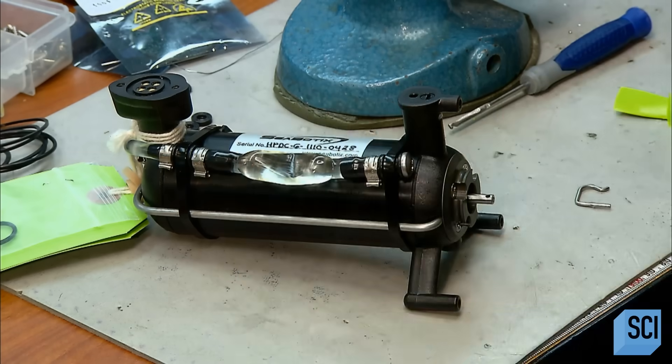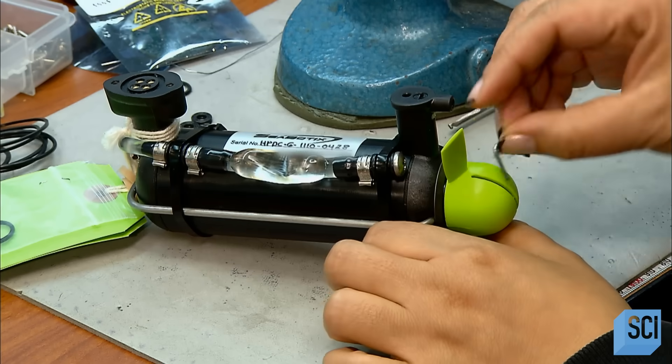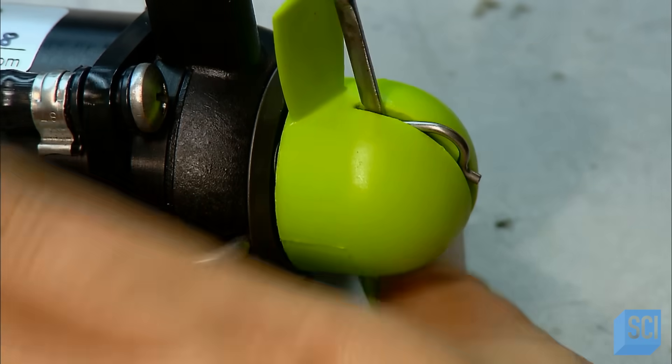Now they turn their attention to the thruster's main component, a two-blade propeller made of durable nylon. It goes on the back end of the thrusters.